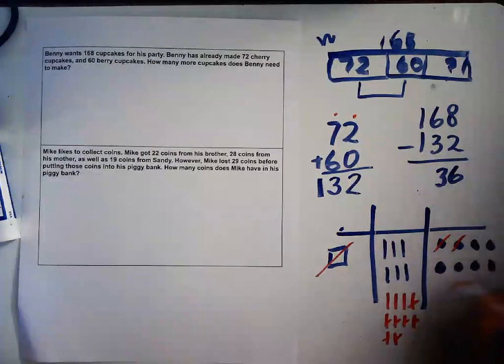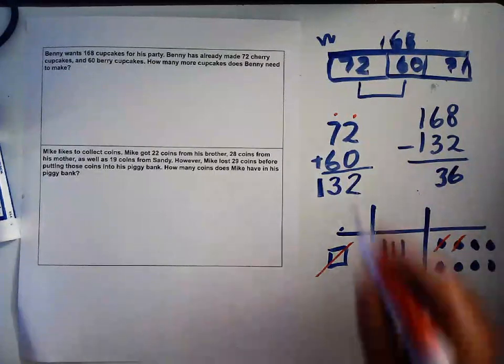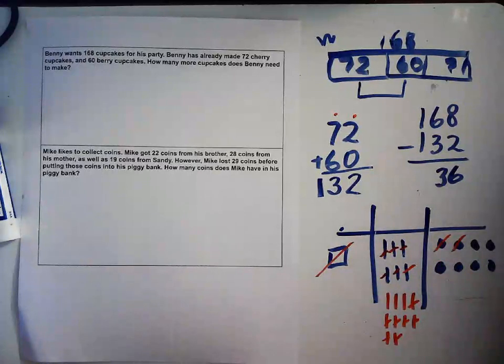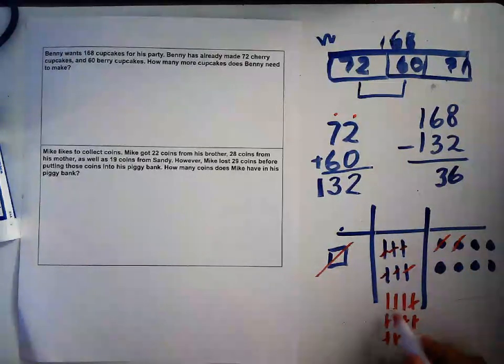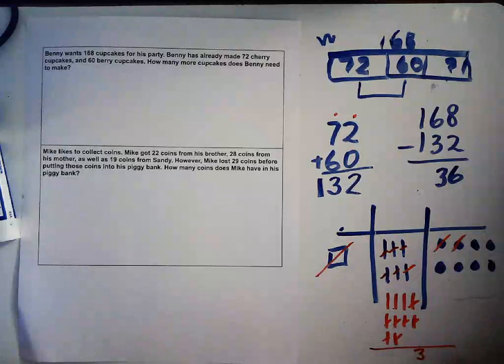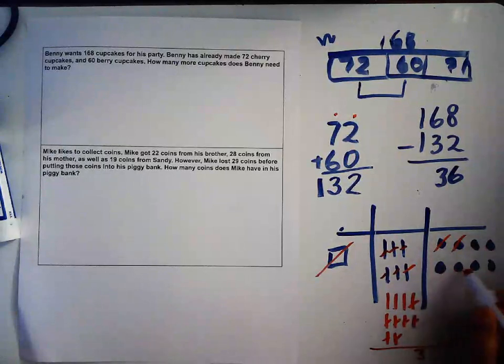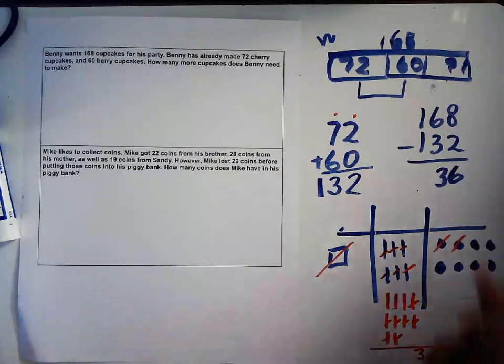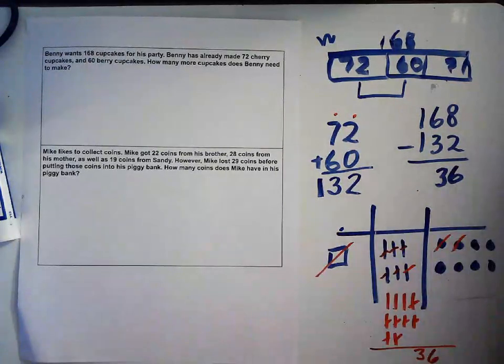Now I have to do 60. I don't have to take any ones yet, so I have to take 6: 1, 2, 3, 4, 5, 6. I'm left with 1, 2, 3 here and I'm left with 2, 4, 6 here. Notice how I got the same thing: 36 here and 36 here. That's a way to verify.